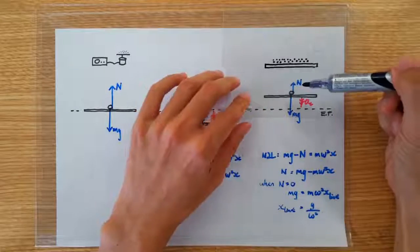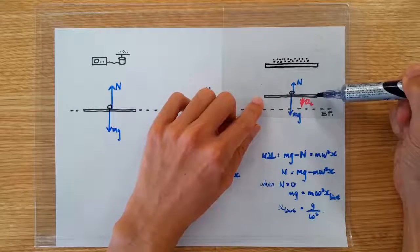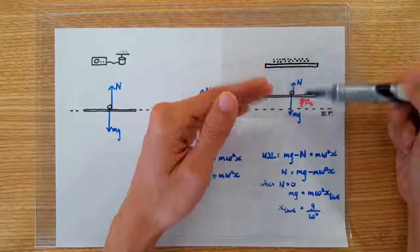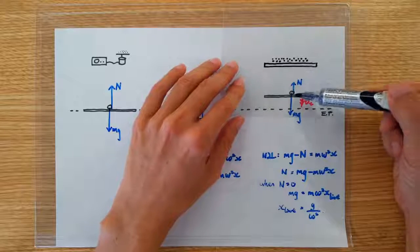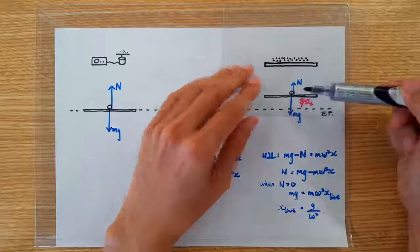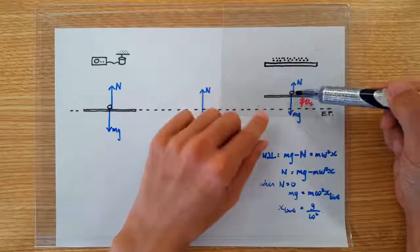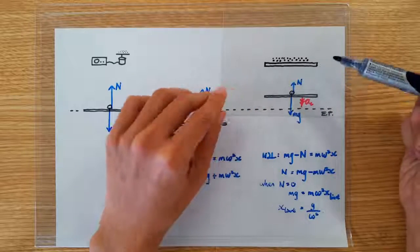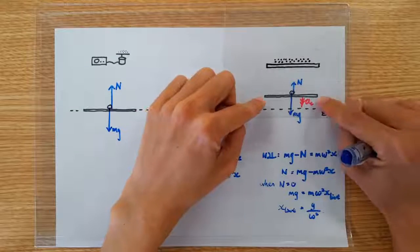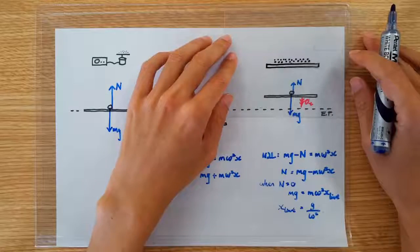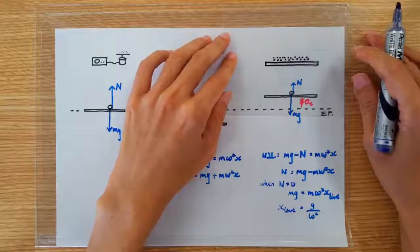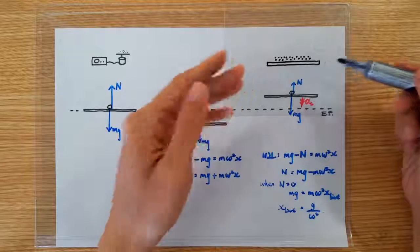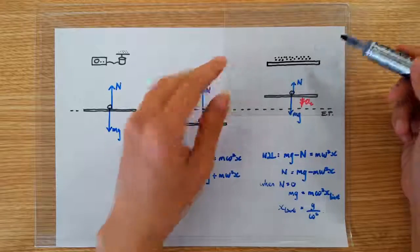Basically, the sand particle has a problem keeping up with the SHM of the plate because it has a maximum downward restoring force and that is mg. The maximum downward restoring force for the sand is mg when the normal contact force has already dropped to zero. So if the oscillation of the plate brings the sand particles to a displacement too high up such that the required restoring force is larger than mg, then the sand particles cannot keep up and will lose contact with the plate.